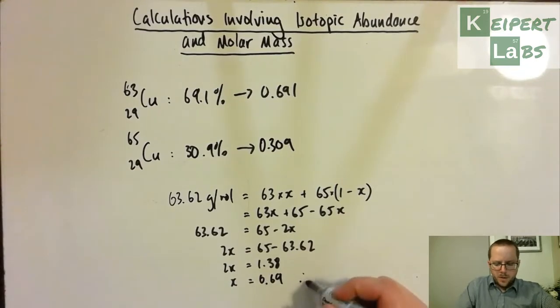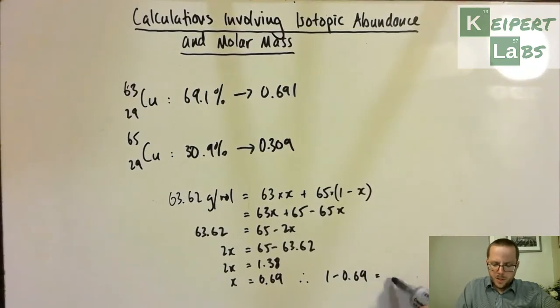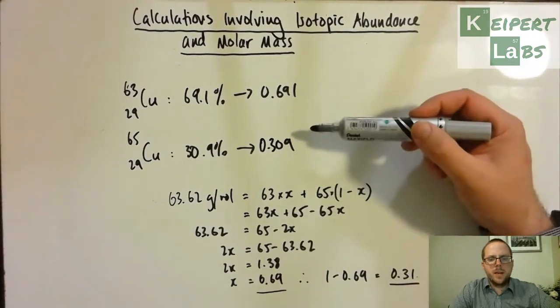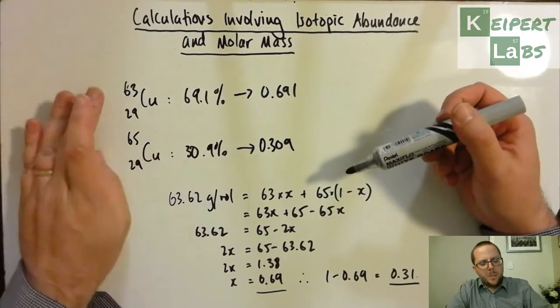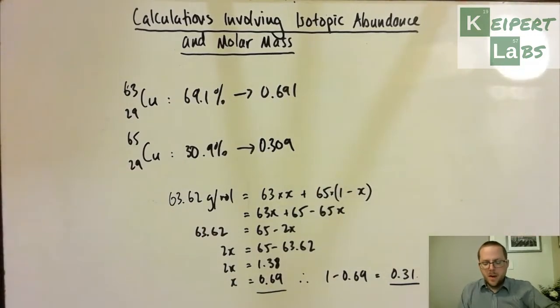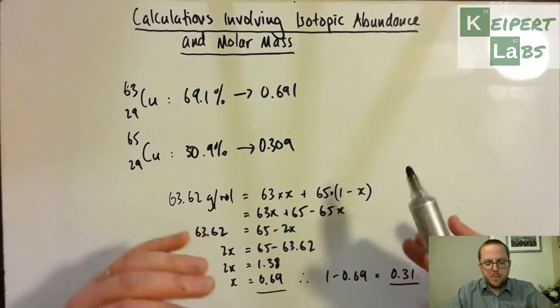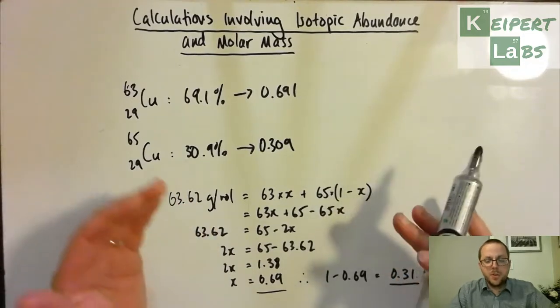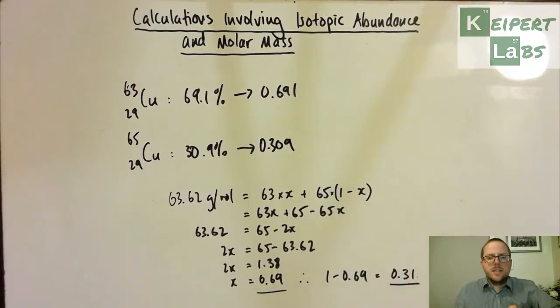So we get 1.38 and once we divide that by 2, we get 0.69. And so therefore, the probability of 65 is 1 minus 0.69, which equals 0.31. And in rounded off terms, those are the same proportions that we calculated up here. So you can see, just from that quick little example, that we can work from either abundances to calculate molar mass or we can work from molar mass to calculate abundances. Now, that would be only as long as you've got two isotopes. You can never be asked a question of more than that because it gets much too complicated. But just demonstrating that that's the sort of thing that's possible.